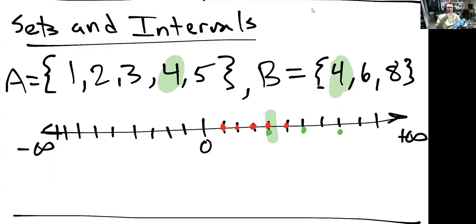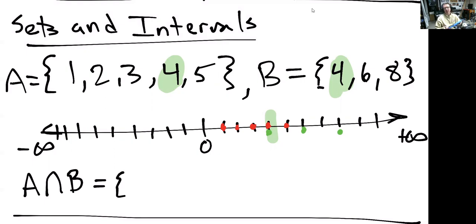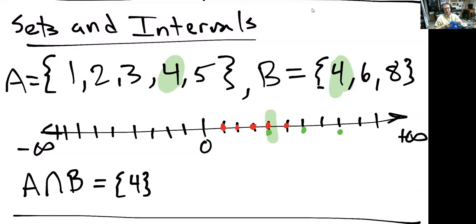Now we can see some similarities between these two sets: they both share the number 4. We can see that on the number line easily. To talk about the numbers that are the same in two or more sets, we use something called an intersection. So A intersect B is the set of all common numbers in both sets. With A and B, it's just {4}. Another way of thinking about intersections is the logical 'and' statement — a number must be in both A and B to be in the intersection.